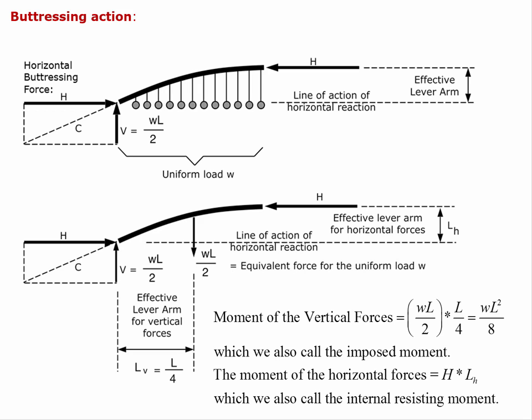WL² over 8 is a universal maximum moment for any structural element spanning a distance L in simple span mode with a continuous load W along the member. Whether this is an arch, a tension member, a truss, or a beam — as long as it spans a distance L with a distributed load W — we get this same expression. We sometimes call this the imposed load, imposed on our structure by whatever loads we have to deal with plus whatever decisions we've made about how far we're going to span.